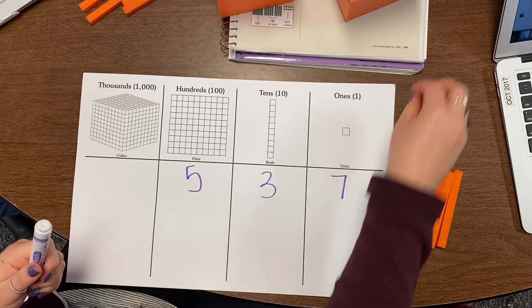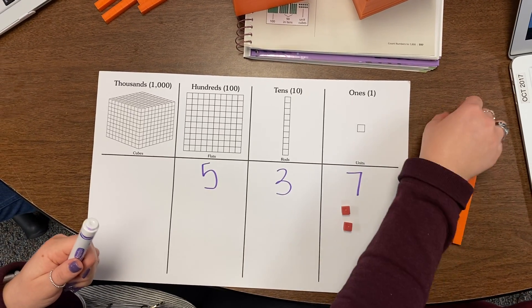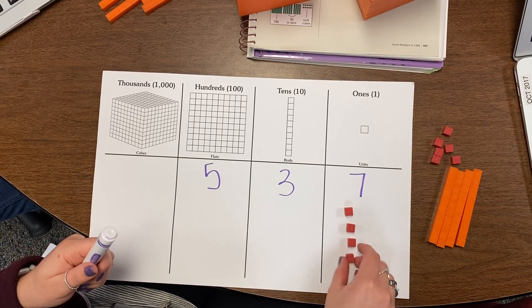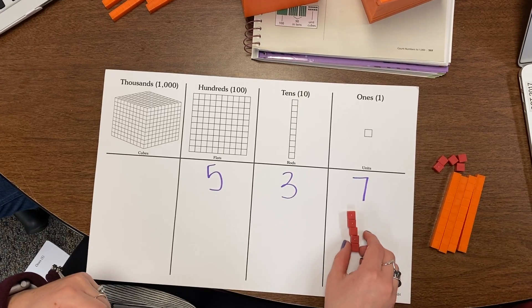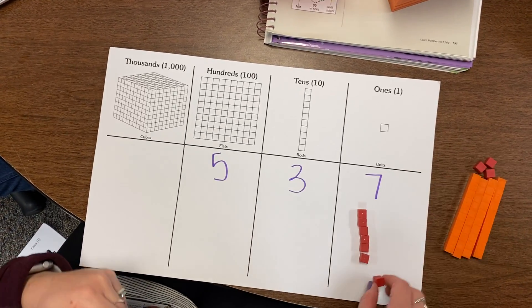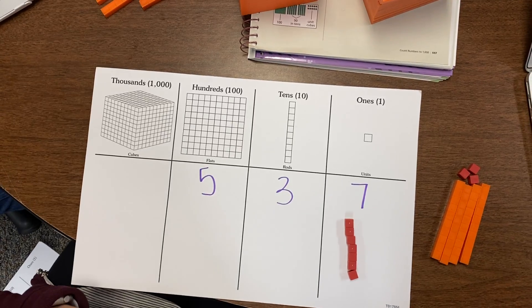So we'll start with the 1's. 1, 2, 3, 4, 5, 6, 7. There we go. Now we have 7.